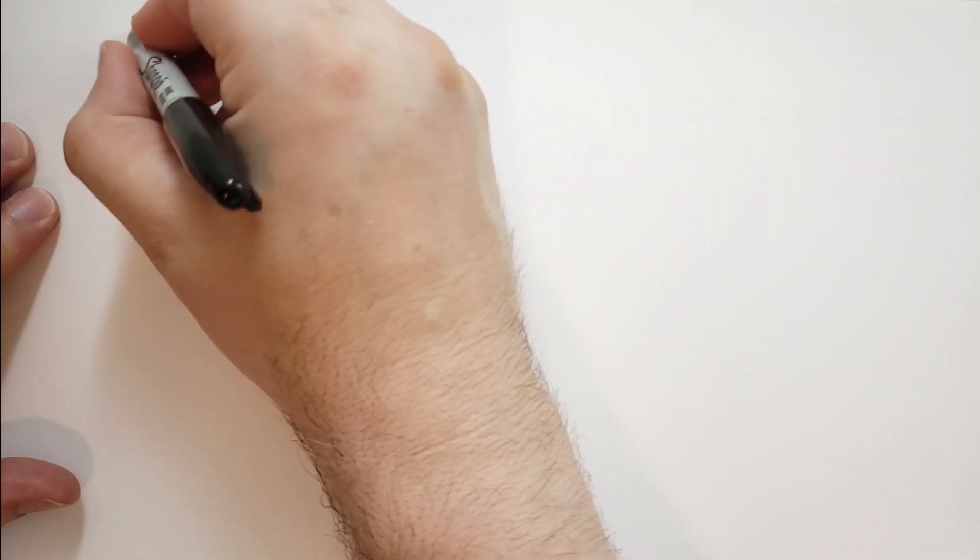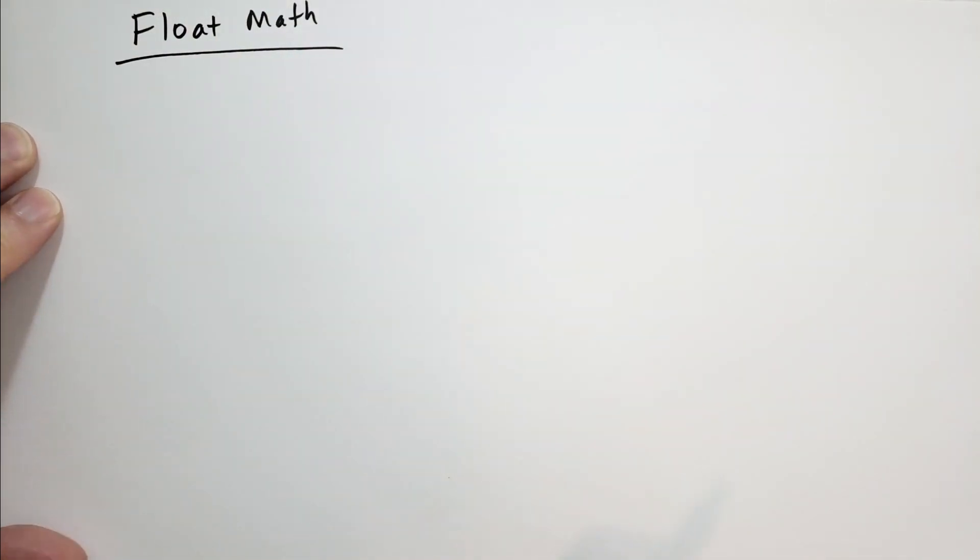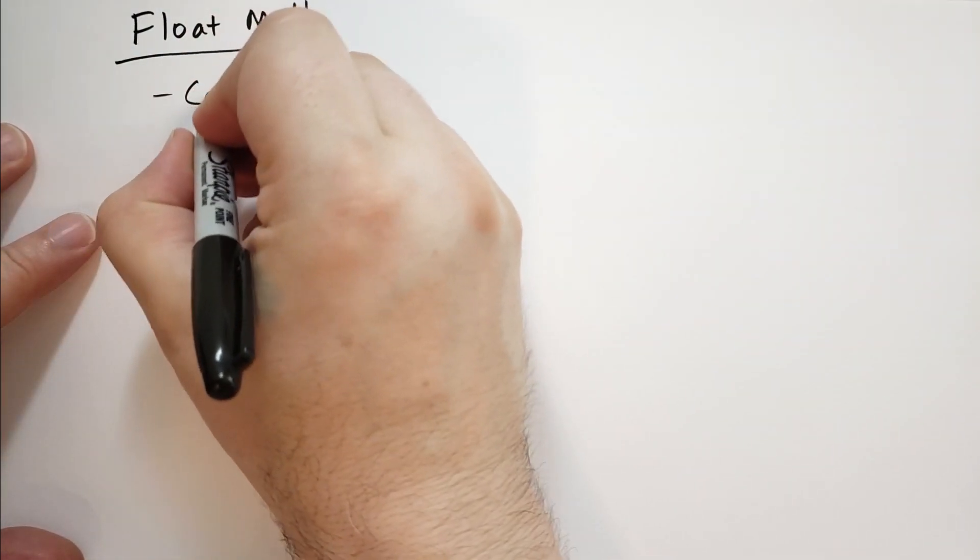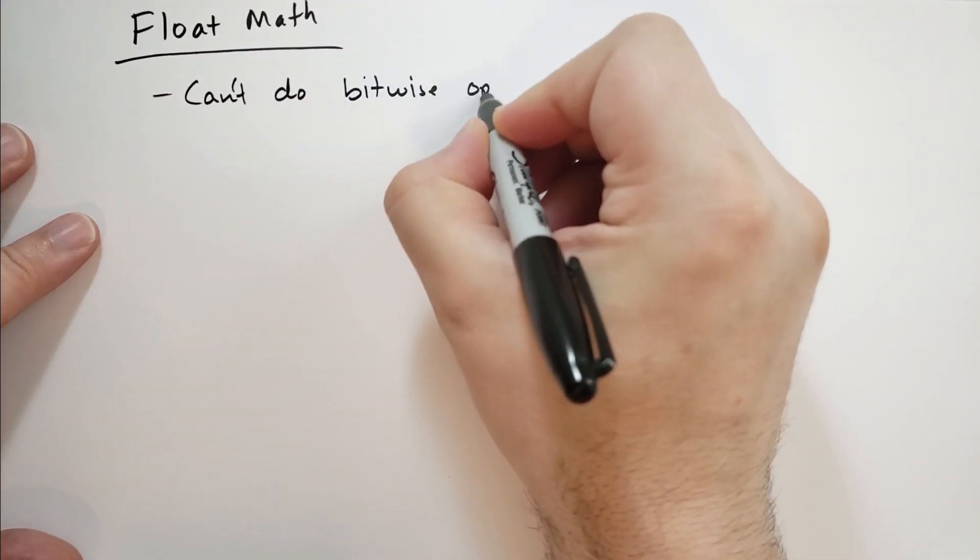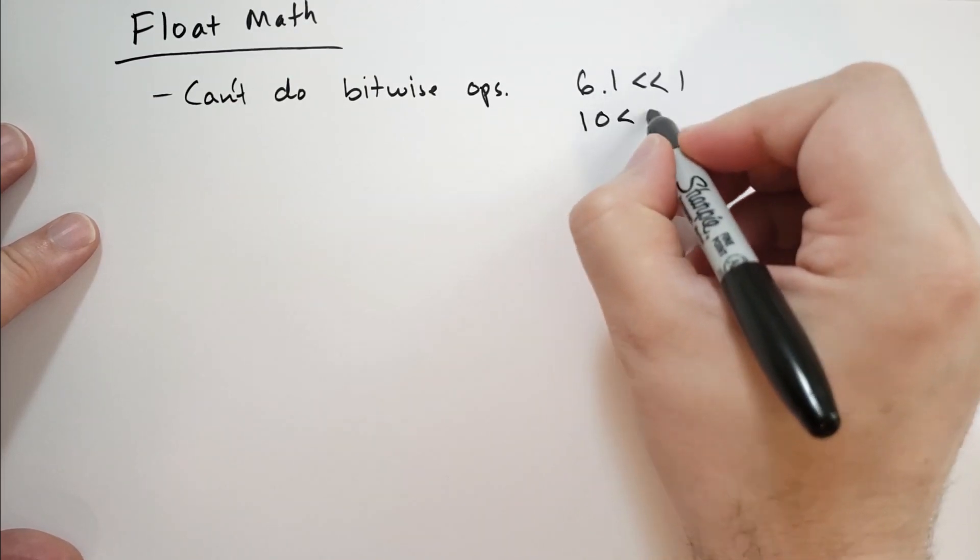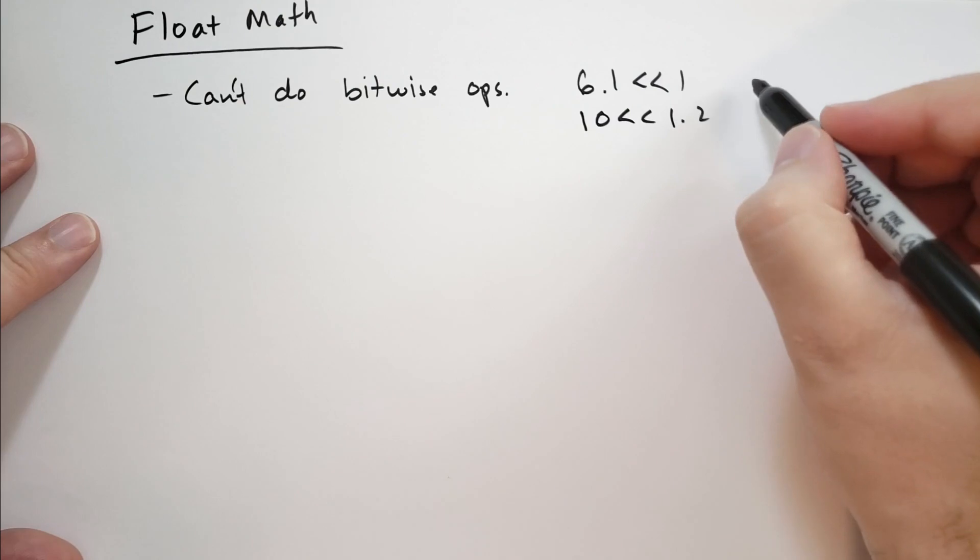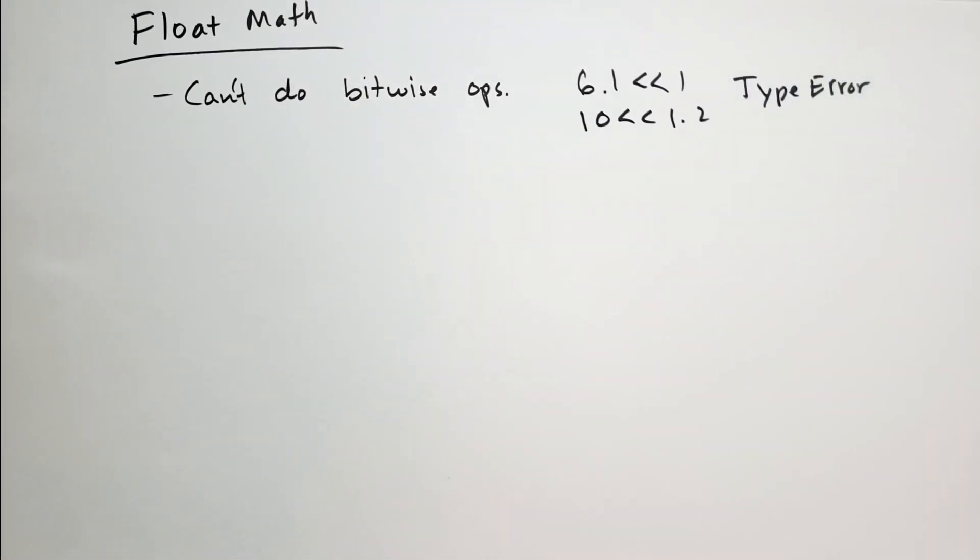Let's talk really quick about the floating point math. So let's talk about float math. This is basically everything you need to know about doing floating point math. So you can't do the bitwise operations with floats. So if you take 6.1 shift right by 1, or if it's like 10 shift right by 1.2, that's not going to work. It's going to say type error. The type error means that you're using the wrong type. And in our next lecture, which is about variables, we're going to talk more about what type means.